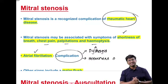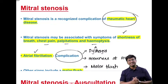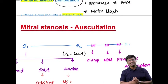Hoarseness of voice in mitral stenosis is due to the enlarged left atrium compressing the recurrent laryngeal nerve — this is called Ortner's syndrome, an important complication of mitral stenosis. In certain individuals, an important physical examination finding is malar flush.